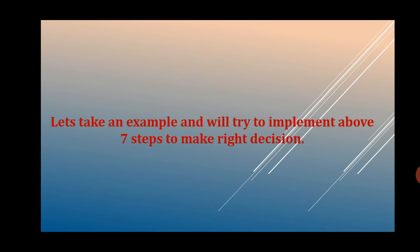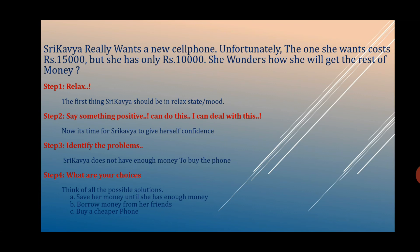Let's take an example and implement the above seven steps to make the right decision. Here, Sri Kavya really wants a new cell phone. Unfortunately, the one she wants costs rupees 15,000 but she has only 10,000. She wonders how she will get the rest of the money.